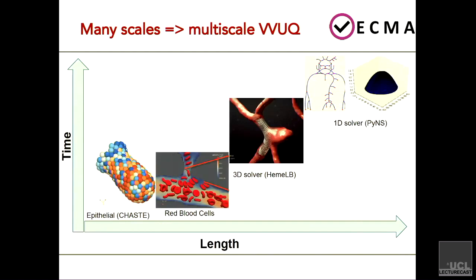Blood flow is very naturally a very multi-scale sort of process. We typically just look at coupling the 1D model to the 3D, but HemelB does also do some of the thread-based processing. One of the things that was supposed to mark VECMA out from other UQ projects was that it was treating multi-scale systems, so that there was uncertainty in the scale coupling as well.